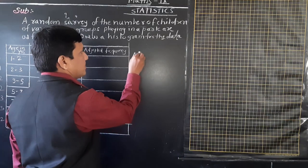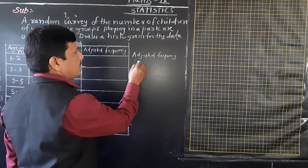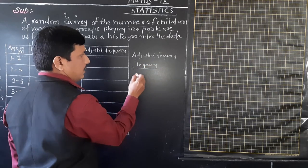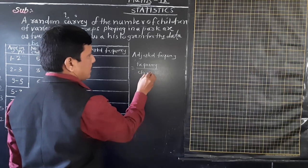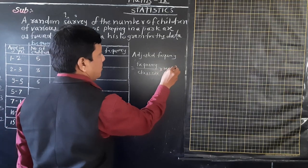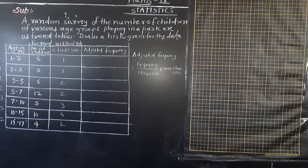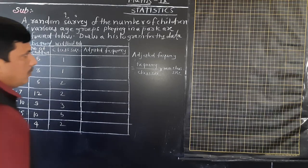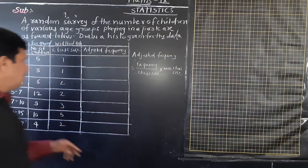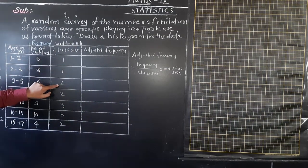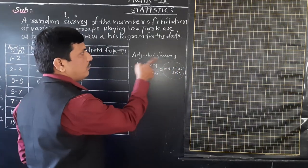There is a formula to find out adjusted frequency. Adjusted frequency equals frequency divided by class size, multiplied by minimum class size. What is the minimum class size here? Looking at the class sizes: 1, 1, 2, 2, 3, 5, 2 - so the minimum class size is 1. That is what we need to use to adjust frequency.